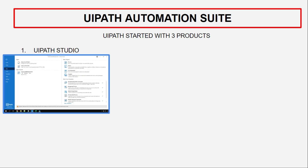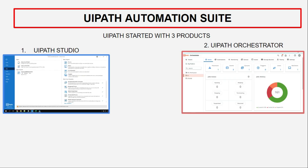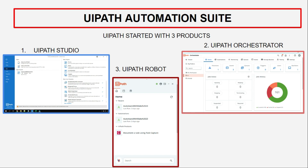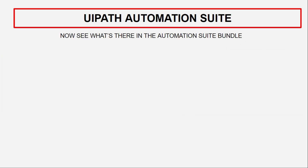First of all, if you remember when UiPath started, we had three products: UiPath Studio, Orchestrator, and UiPath Robot. These images I've captured recently, but you can imagine the older look they had — the Studio, Orchestrator, and Robot. Those were three products, but now UiPath has got multiple products, and I'm pretty sure almost all of you will be able to name a lot of them.